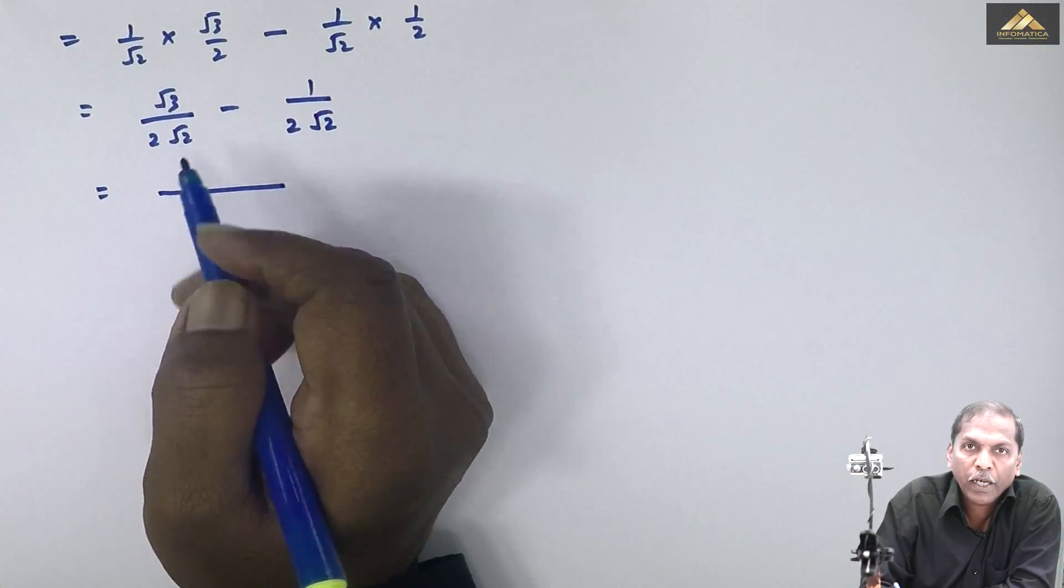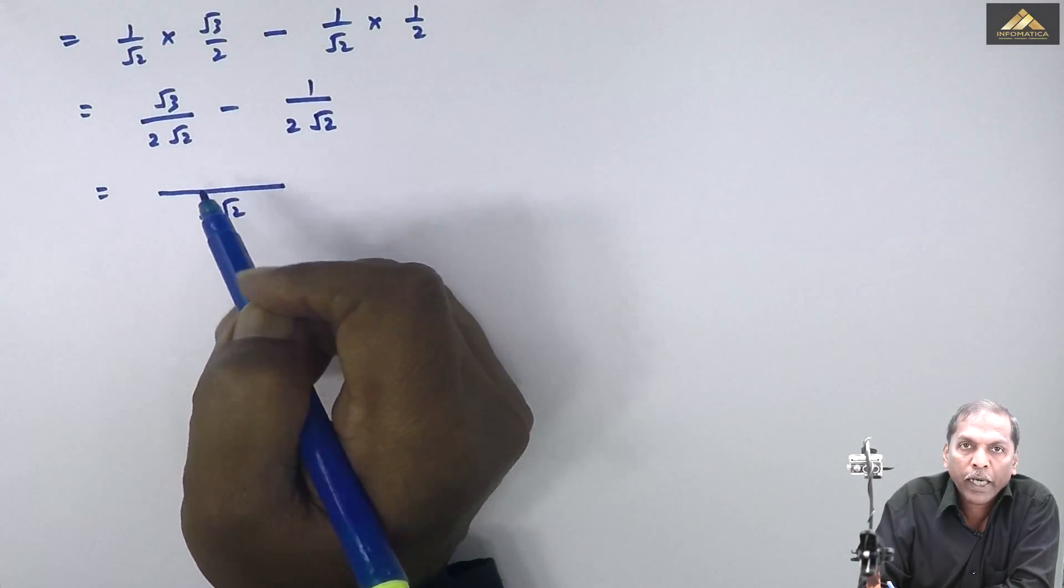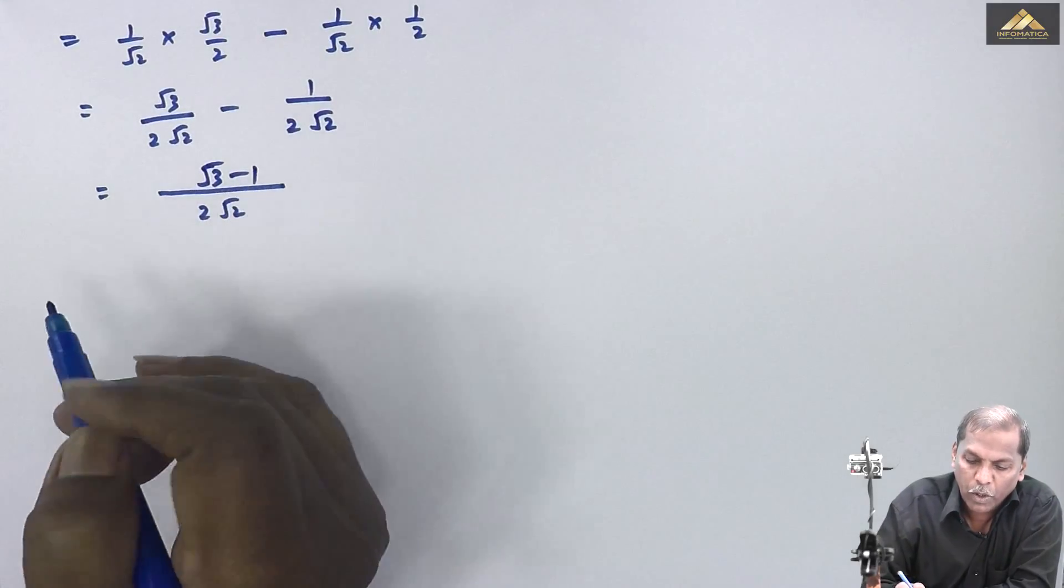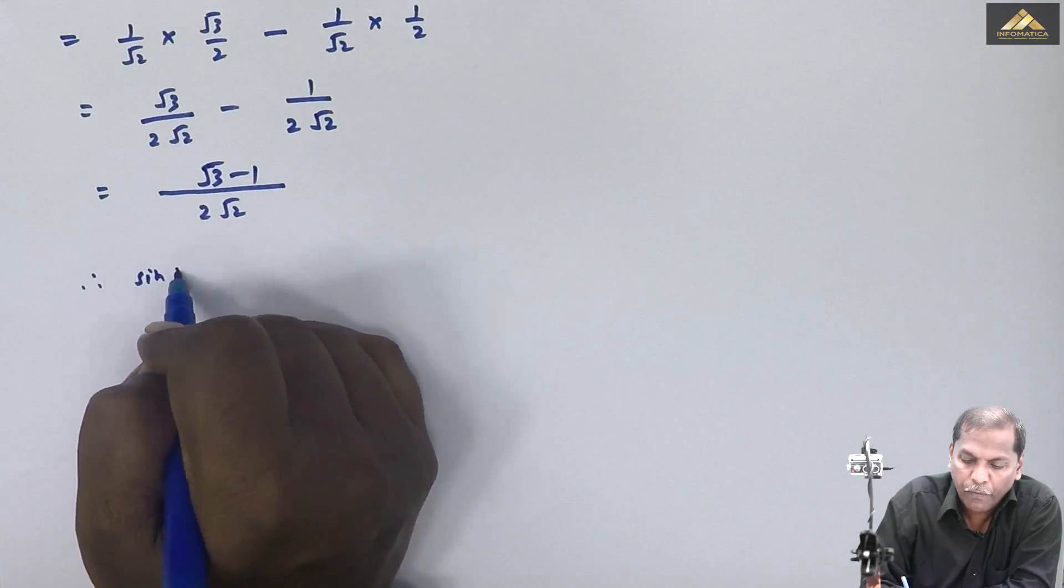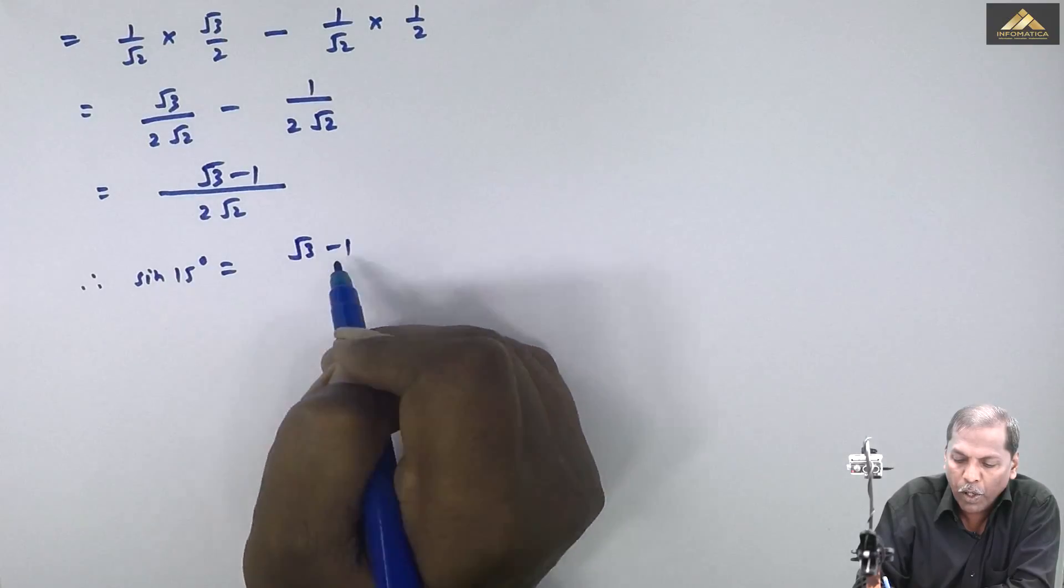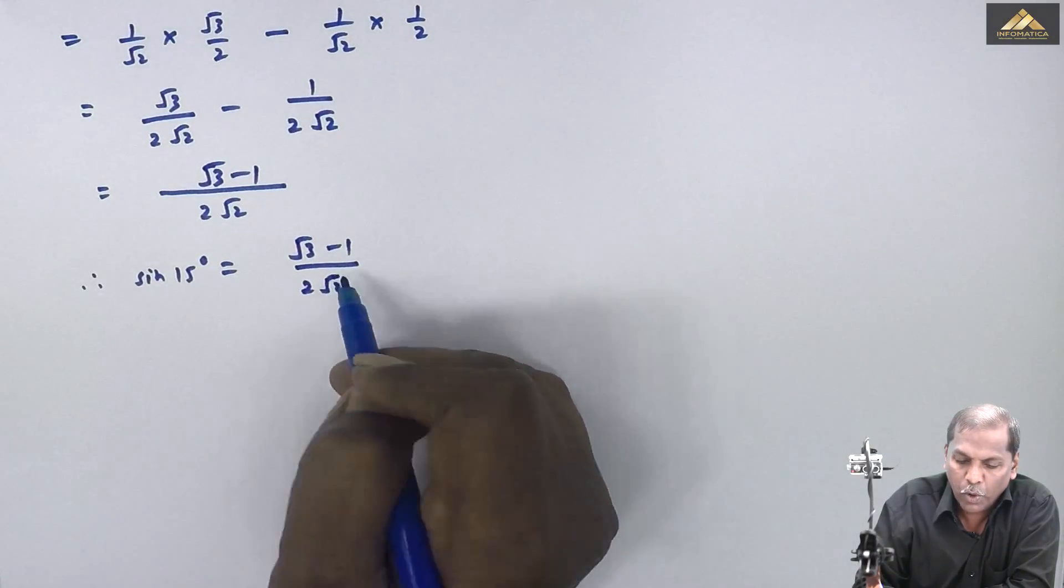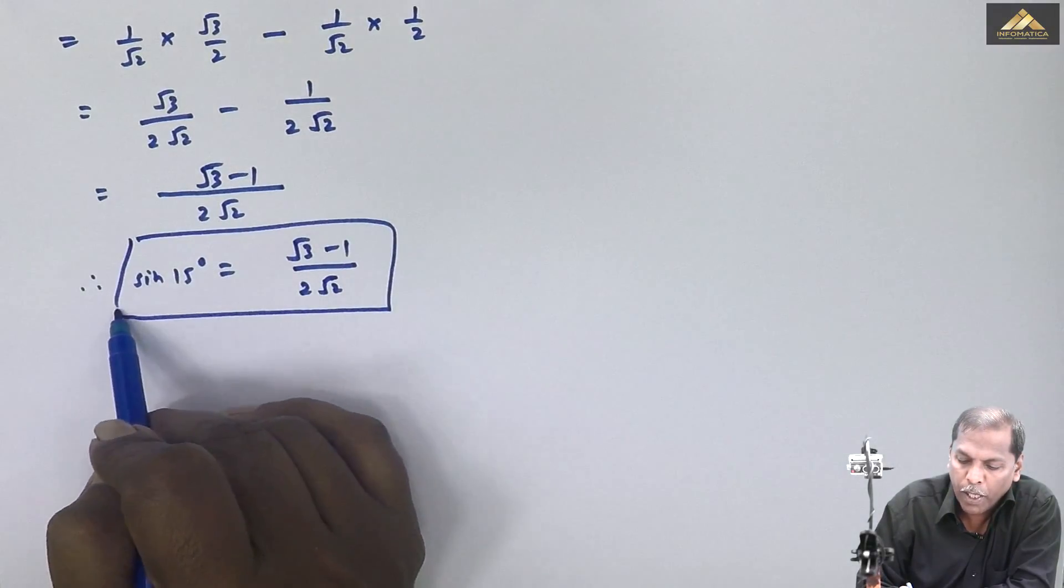And finally we get, if we take 2 root 2 as LCM, then in the numerator we get root 3 minus 1. So finally, therefore, sin 15 degree, the answer we got is root 3 minus 1 upon 2 root 2. We can box this answer.